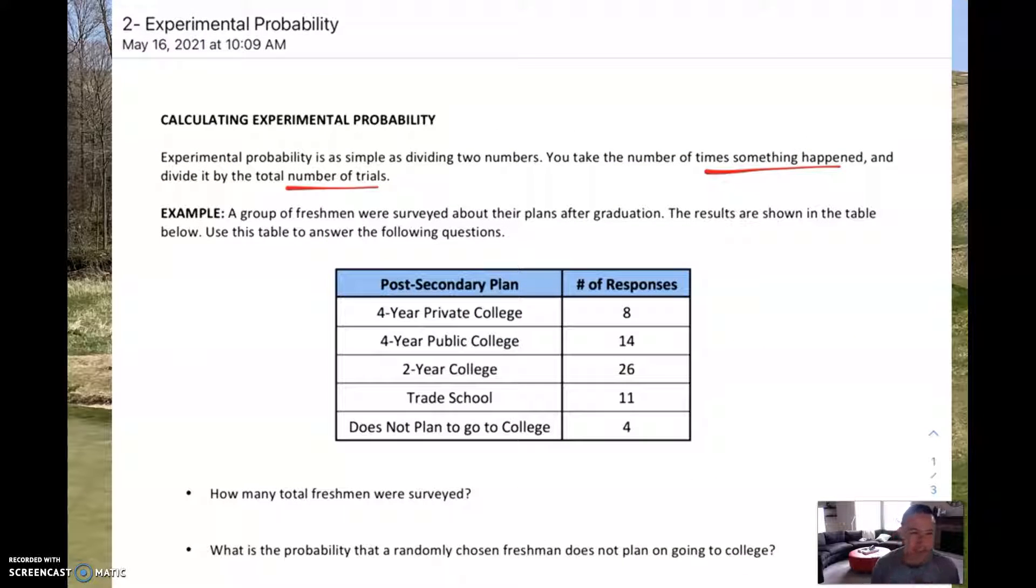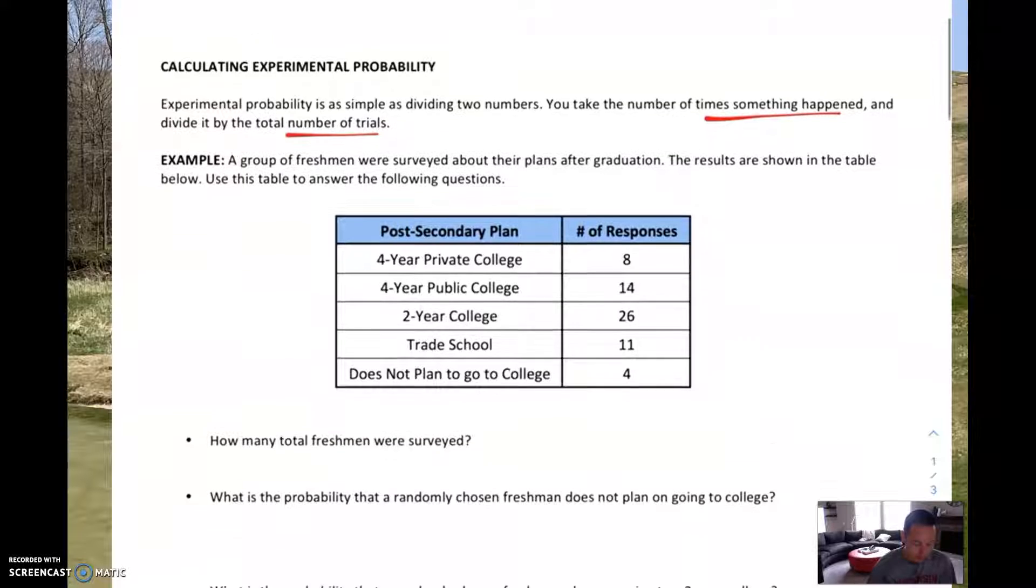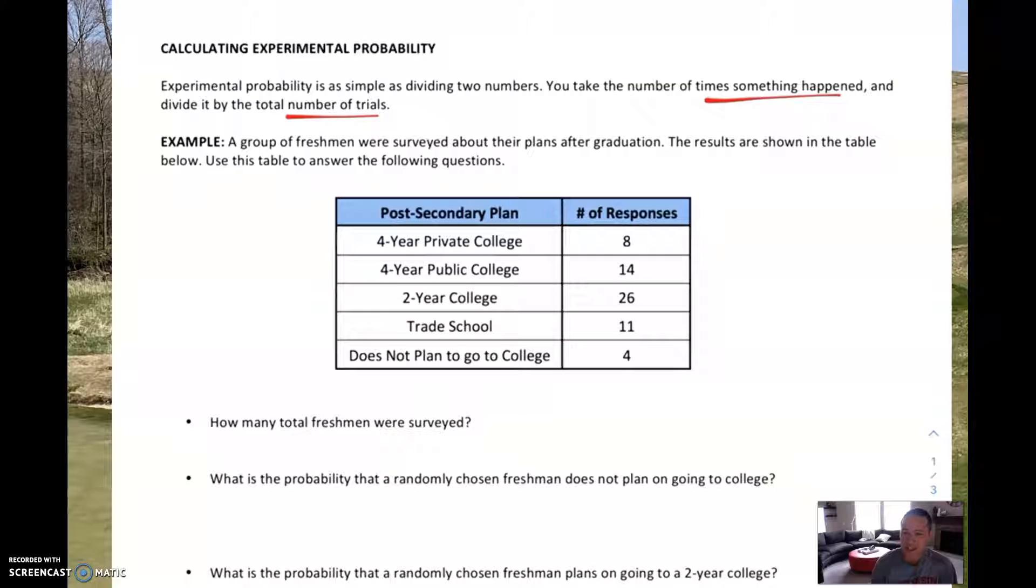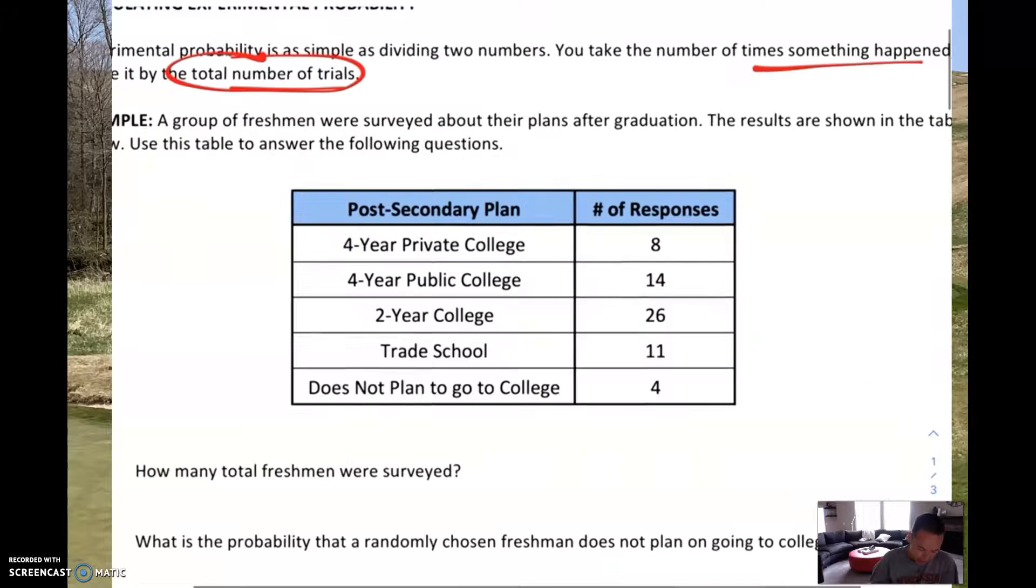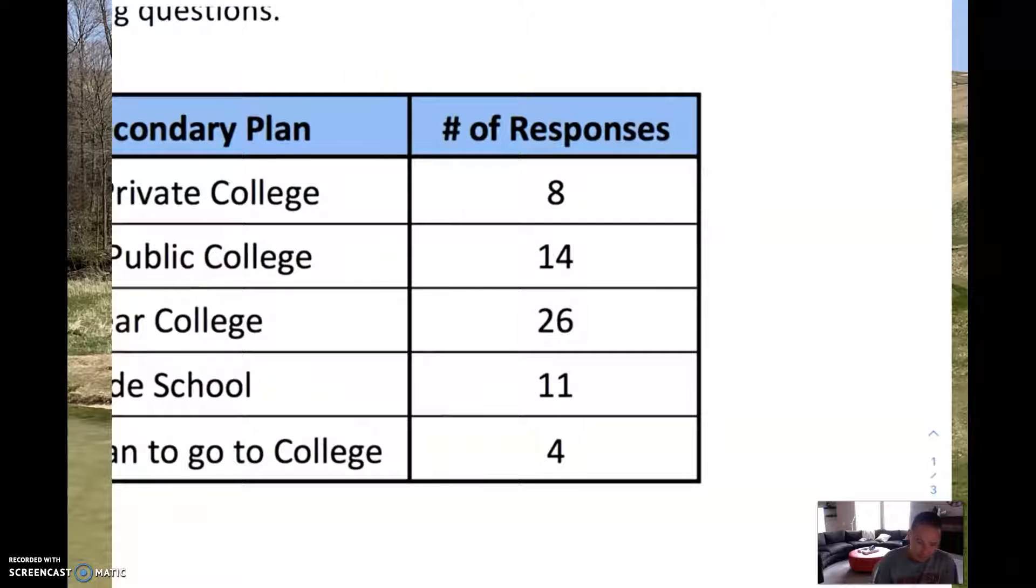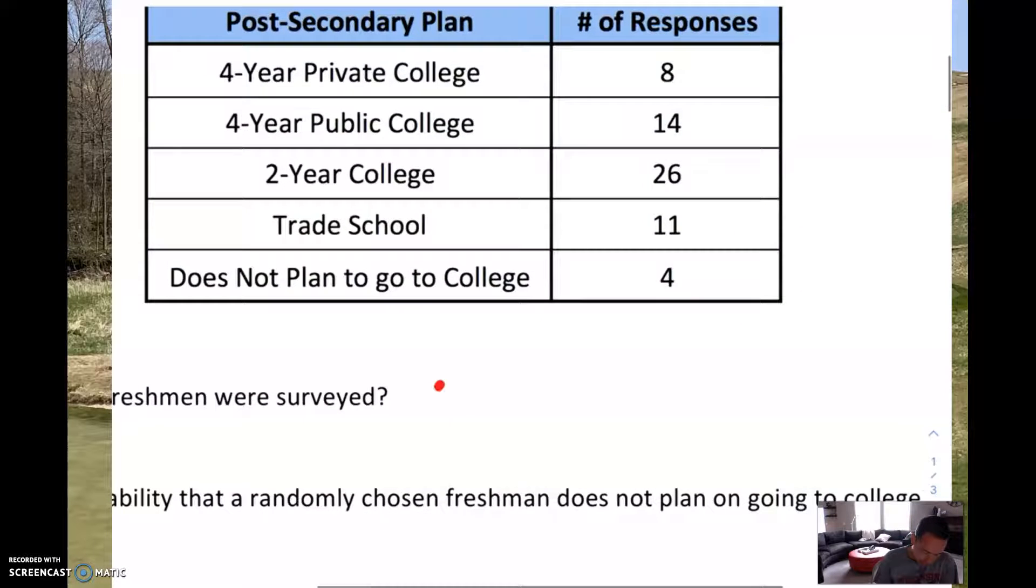Let's take a look at this first example. You have a group of freshmen surveyed about their plans after graduation. Most of you have been in advisory and we've given you tours of different public colleges, private colleges, and trade schools. Pretend that we surveyed a bunch of students here and here were their responses. The first thing we need to know is how many total freshmen were surveyed. This is like the total number of trials, so that's going to be my denominator. All I have to do is take 8 plus 14 plus 26 plus 11 plus 4. If we add them all together, we have a total of 63.